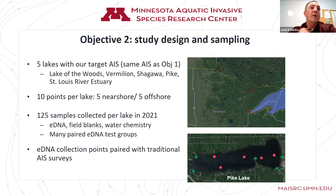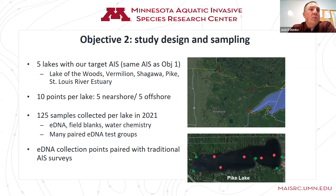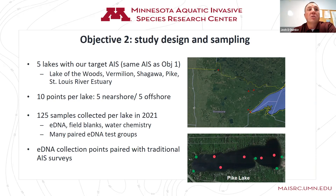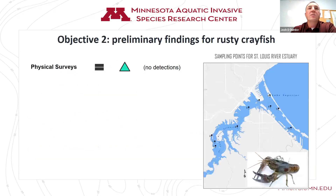We collected 125 samples per lake — mostly eDNA and field blanks, with four for water chemistry cations and anions. We had many paired eDNA test groups: at the same locations and same time, with one different variable between test groups, so we can tease out how differences show up when you change water volume or filter type, for example. eDNA collection points were paired with traditional invasive species surveys — while the boat was anchored and we were collecting water samples, we would follow up with a traditional survey to determine if target invasive species were detectable.